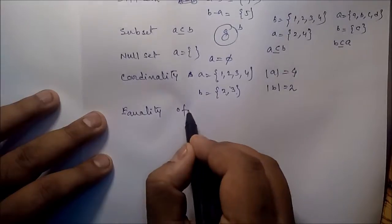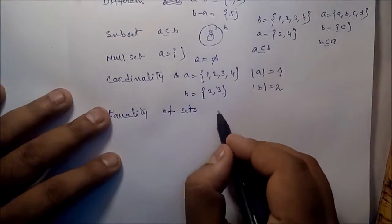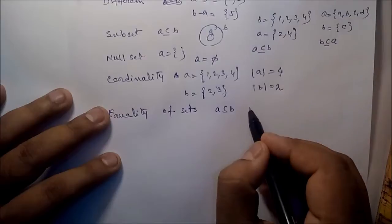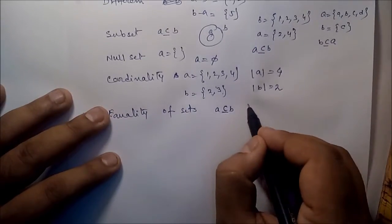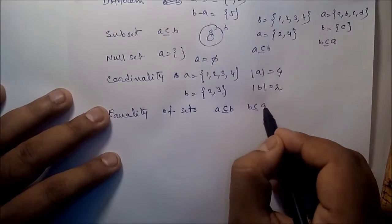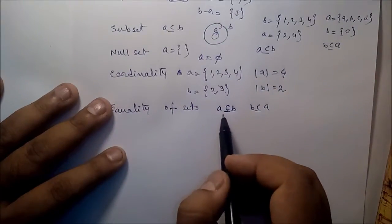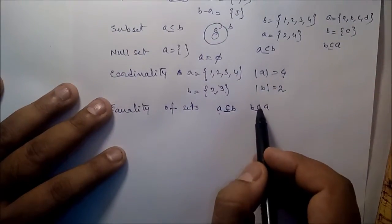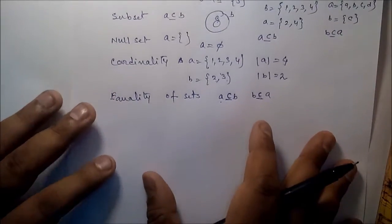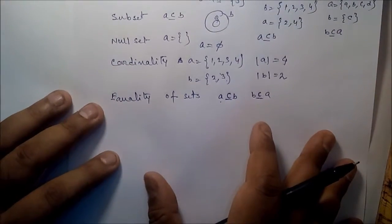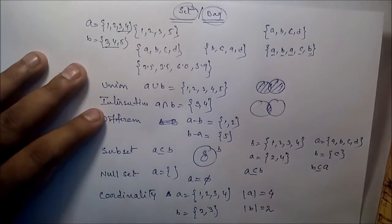Finally, equality of sets. If A is a subset of B and B is a subset of A, then they satisfy the equality property. Now the question is: how do we store set data in a computer? There are three ways: using a list or linked list, using hash tables, using a bit vector, and using a tree.